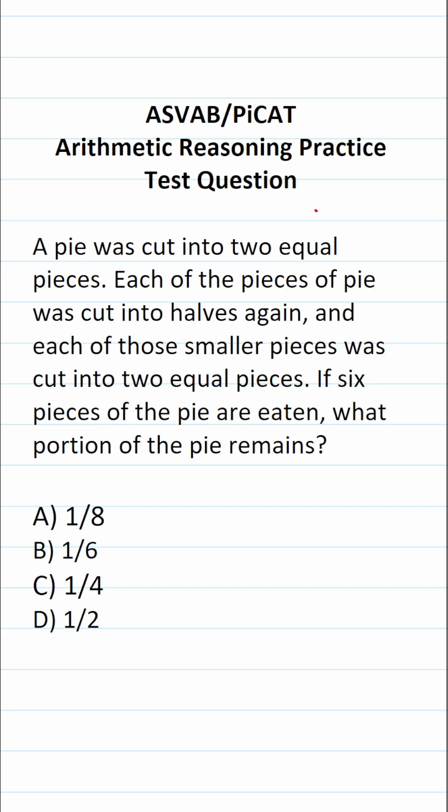Each of the pieces of pie was cut into halves again, and each of those smaller pieces was cut into two equal pieces. Six pieces of the pie are eaten. What portion of the pie remains?